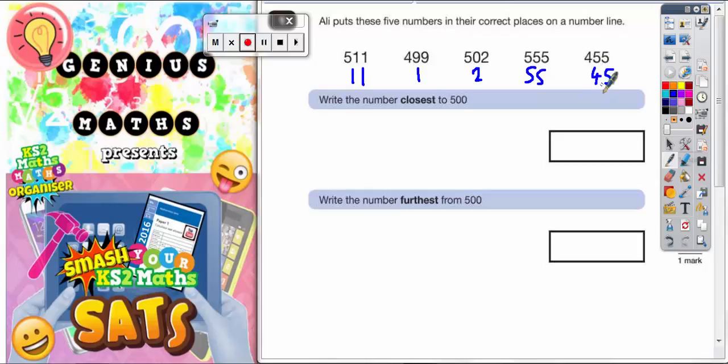But let's say you couldn't do that one in your head because that's the hardest one. You could do a quick column method just to double check by subtracting 455 from 500 to find the difference. And the difference would actually be the gap.